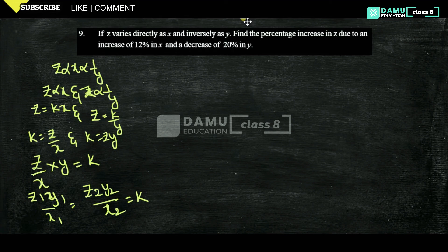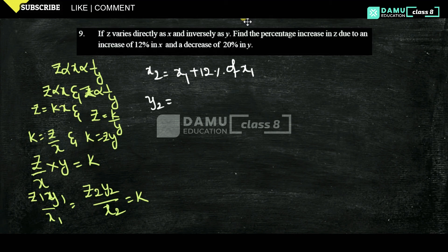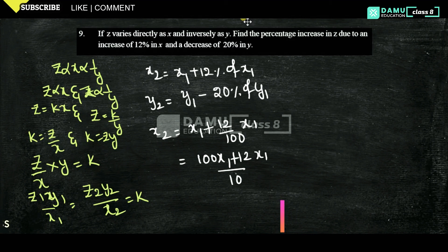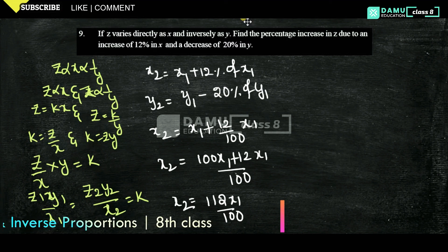To find the percentage increase: x1 and y1 are the original values. x2 is x1 increased by 12%, so x2 equals x1 plus 12/100 times x1, giving us 112·x1 divided by 100. y2 will be y1 minus the 20% decrease.